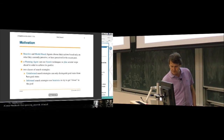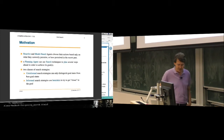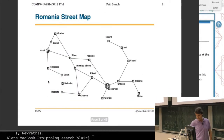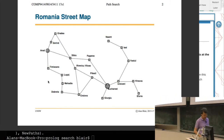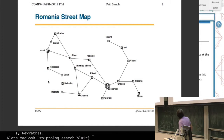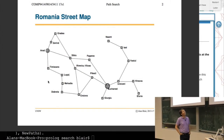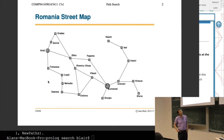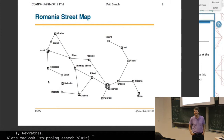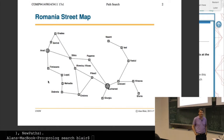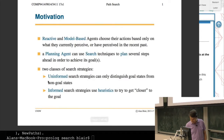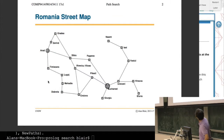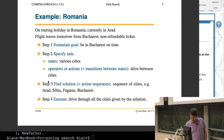We're focusing on planning agents that use a transition graph as a world model. This example is taken from the textbook and is based in Romania. The idea is that you're on holiday in Romania, currently in Arad, and you have to get to Bucharest the following day because you have a non-refundable ticket home. You need to plan how to get to Bucharest, and we'll look at this example repeatedly with different search algorithms. You have a start state and one or more goal states, and you have to figure out a path from one to the other.